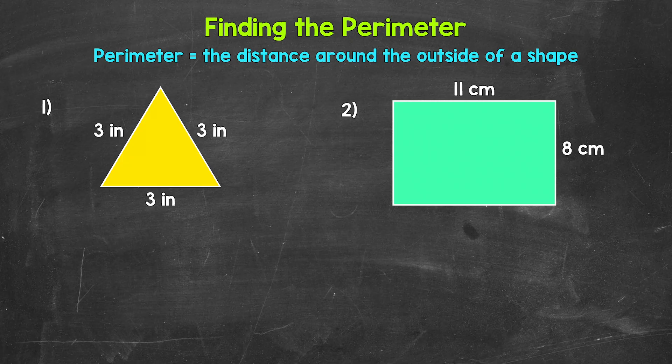And remember, perimeter is the distance around the outside of a shape. So when we find the perimeter of something, we add all of the side lengths. In this video, we'll go through four examples together, and then you'll try two practice problems on your own.